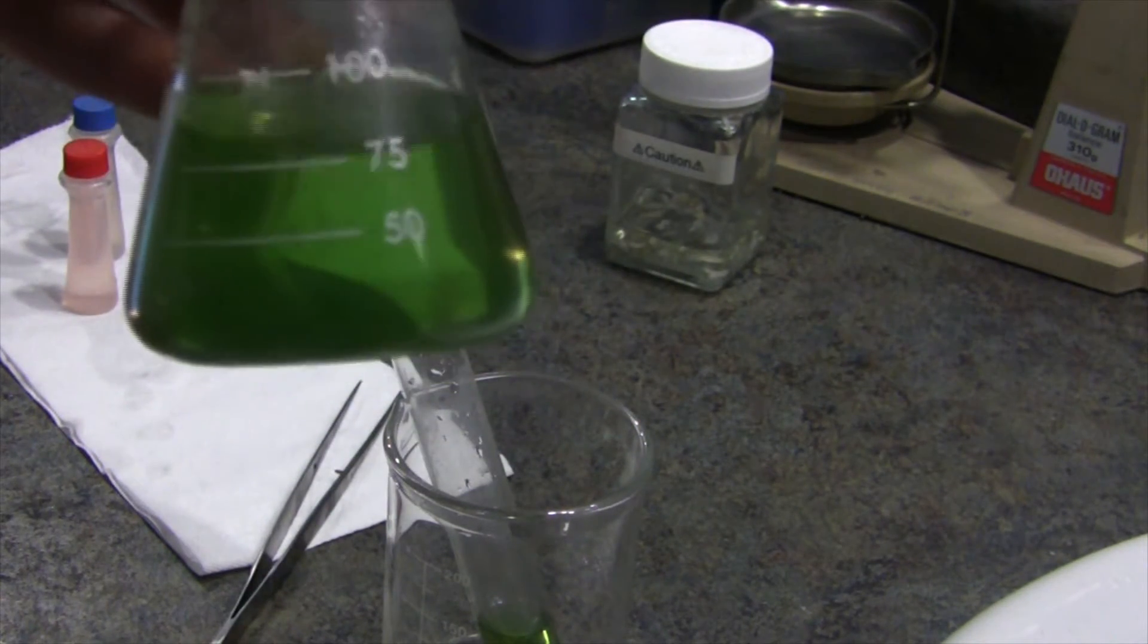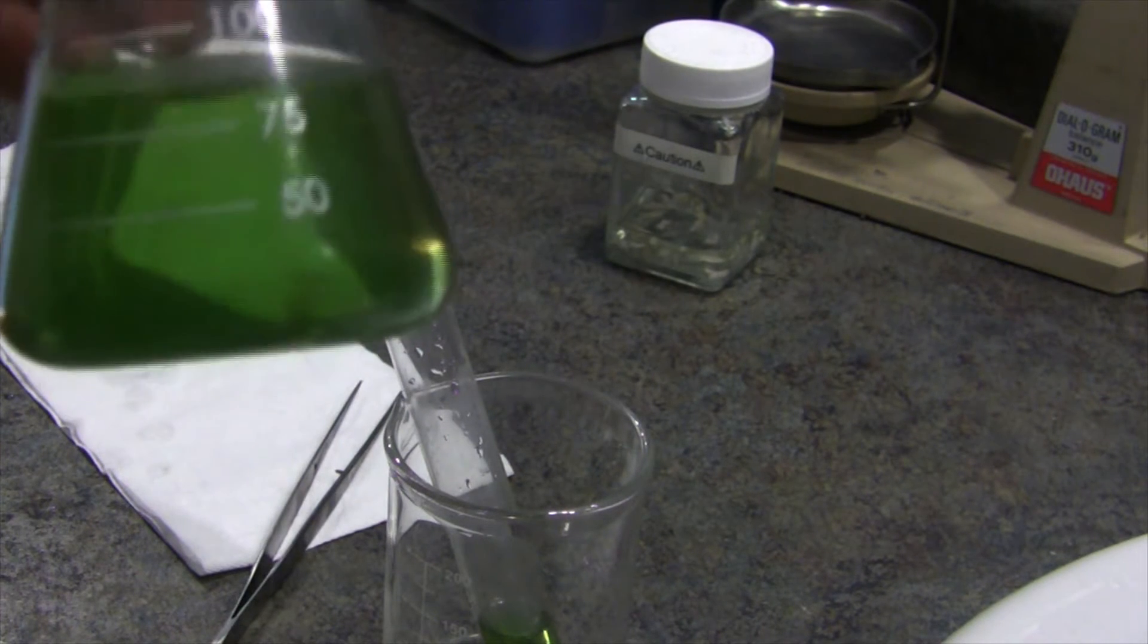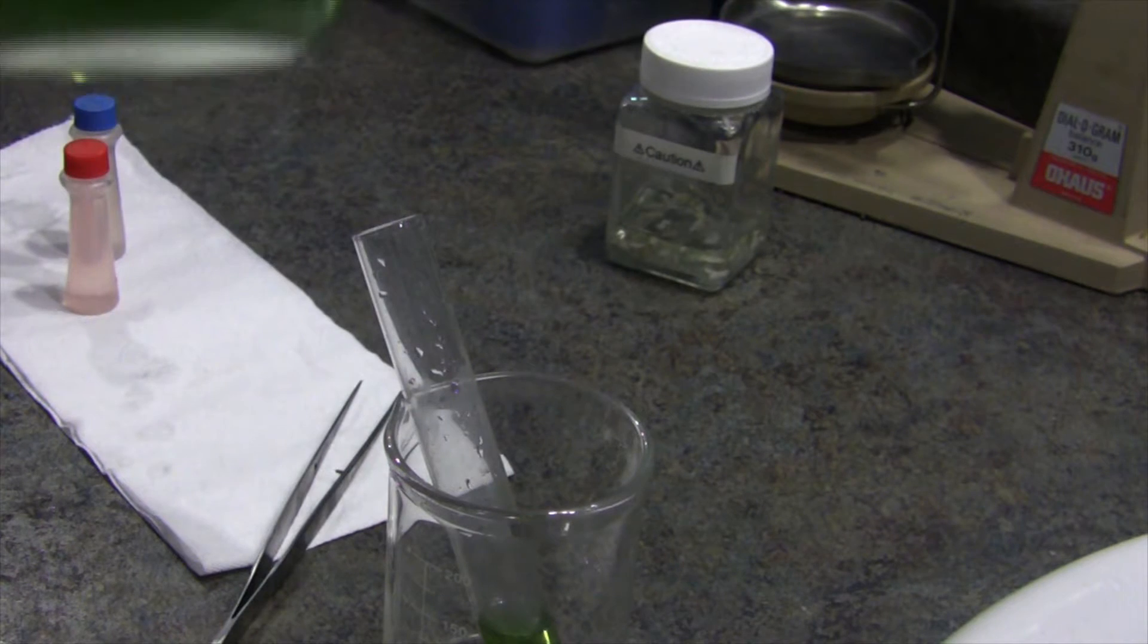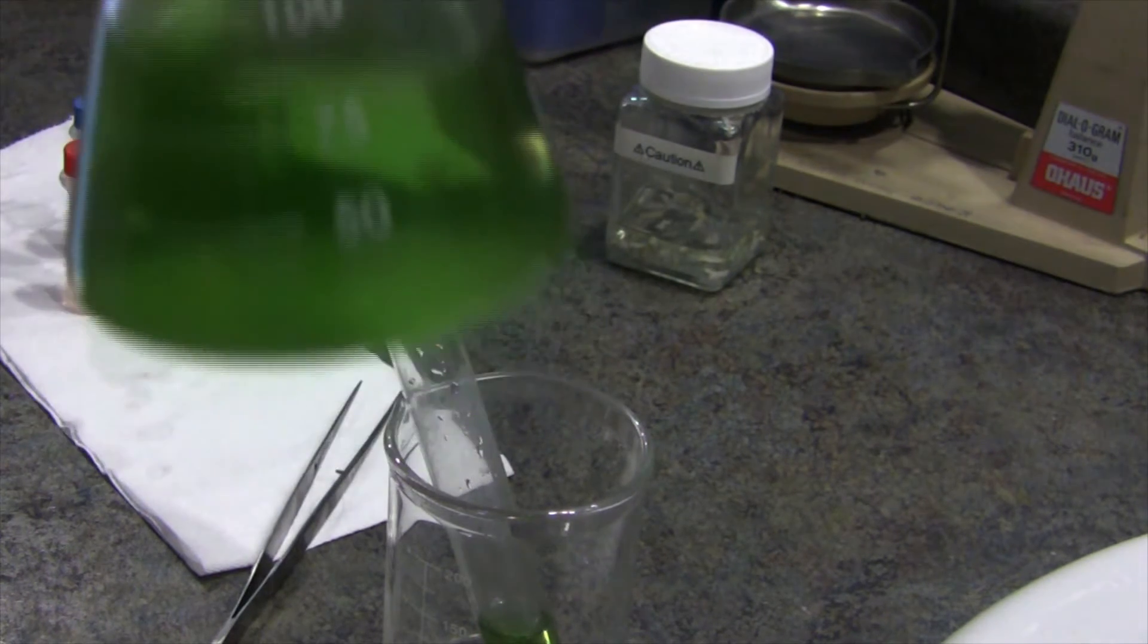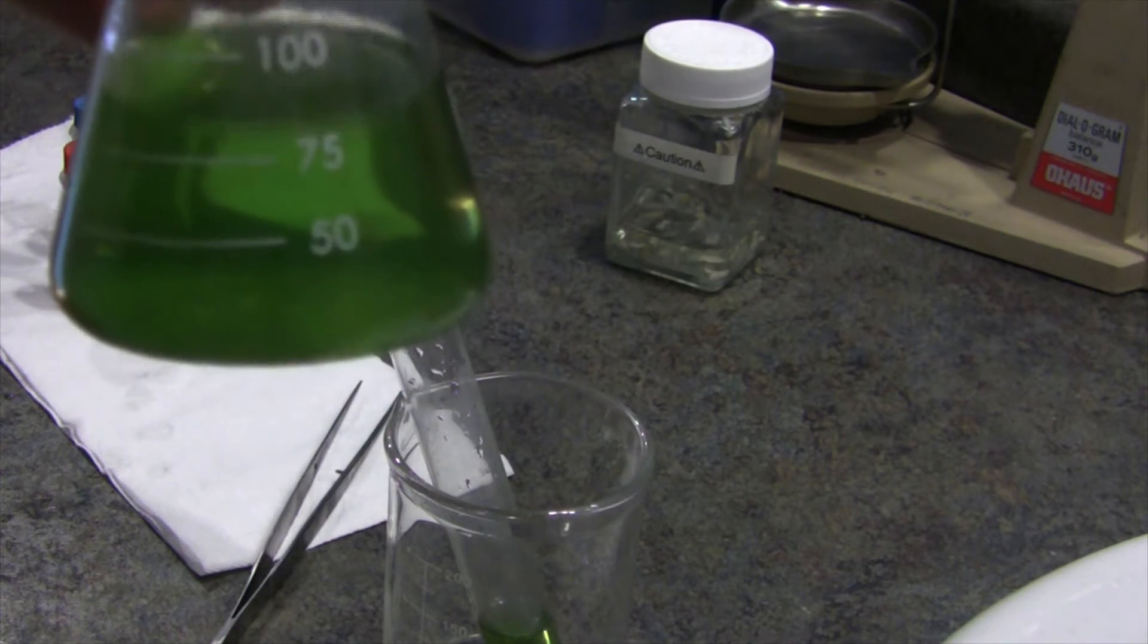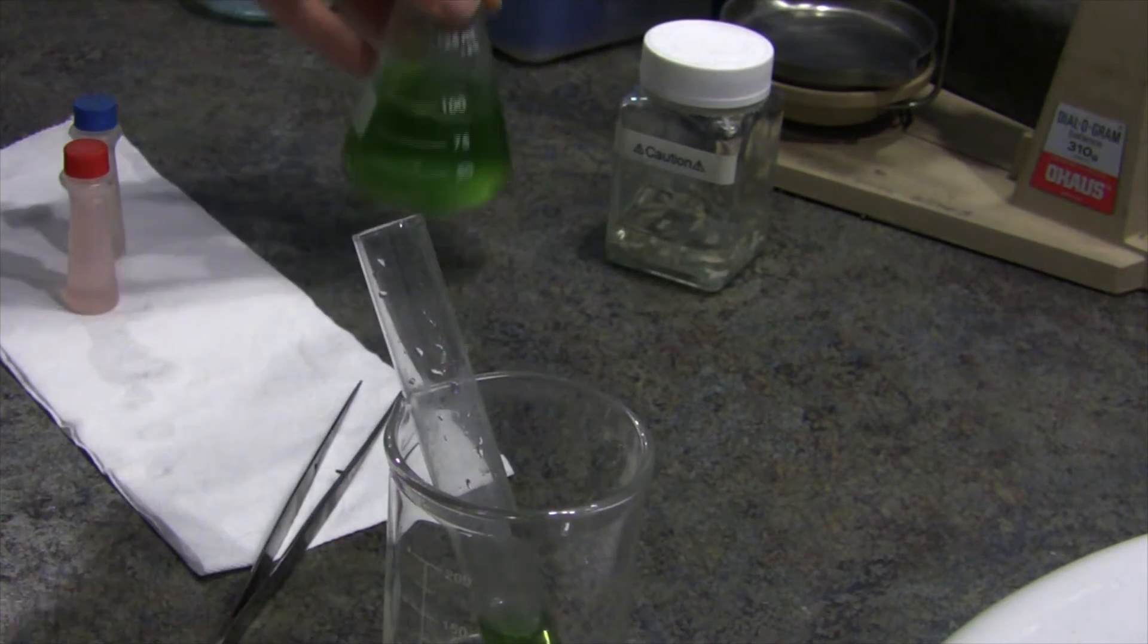It's a universal pH indicator in its neutral phase, which is green. It turns darker red, orange and red for acids, and it turns darker green, then blue, then purple for bases.